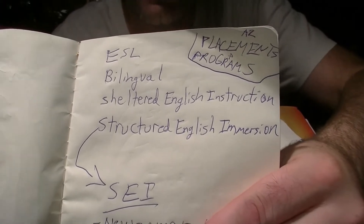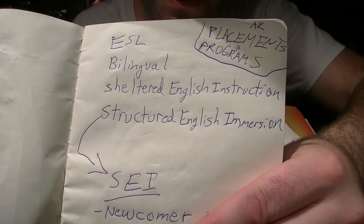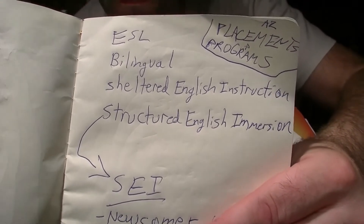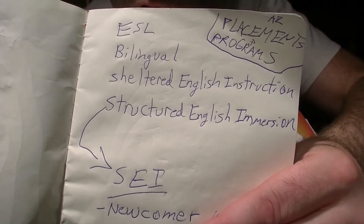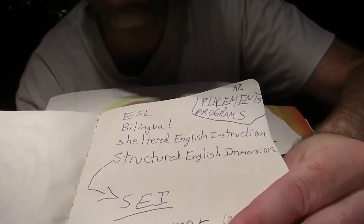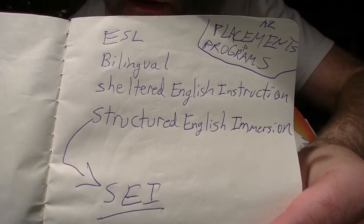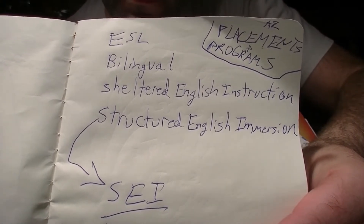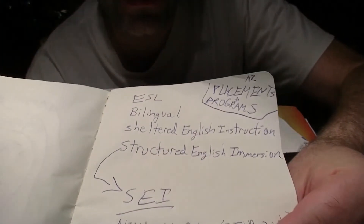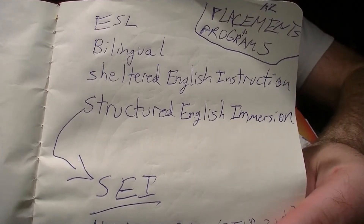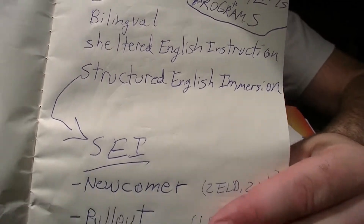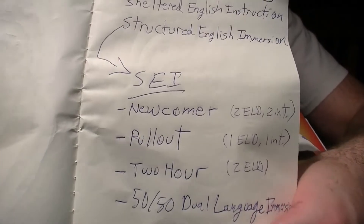Let's take a minute to talk about some of these placements and programs that Arizona now has as options, as opposed to a one-size-fits-all ESL program. ESL — English as a second language — could mean a lot of things. Bilingual means the instruction is being done in two languages; in our country, most often Spanish and English. Sheltered English instruction has ELL students, possibly from different language backgrounds, all in one room, receiving English instruction through content areas. And structured English immersion is English learning happening through immersion in other classrooms to various degrees.